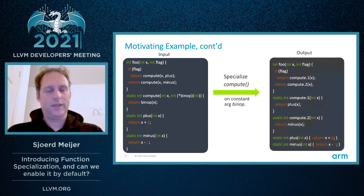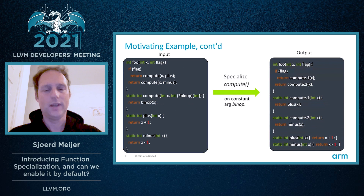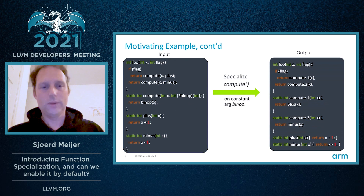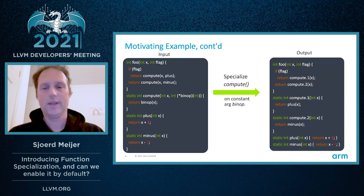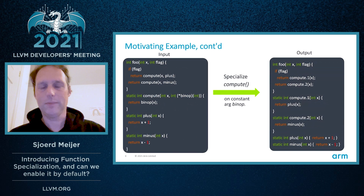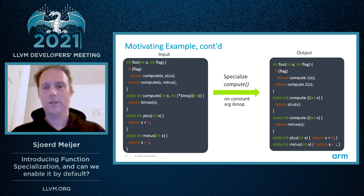Let's apply function specialization to this example. On the left is the same input, and on the right is the output of applying function specialization on the compute function — we specialize on the constant argument binary operation. We create two versions: compute.1 and compute.2. Compute.1 has plus propagated down to its body, and compute.2 now directly calls minus. Looking at foo, its call sites are fixed up so we now either call compute.1 or compute.2. The result is that we have gotten rid of some indirect calls.